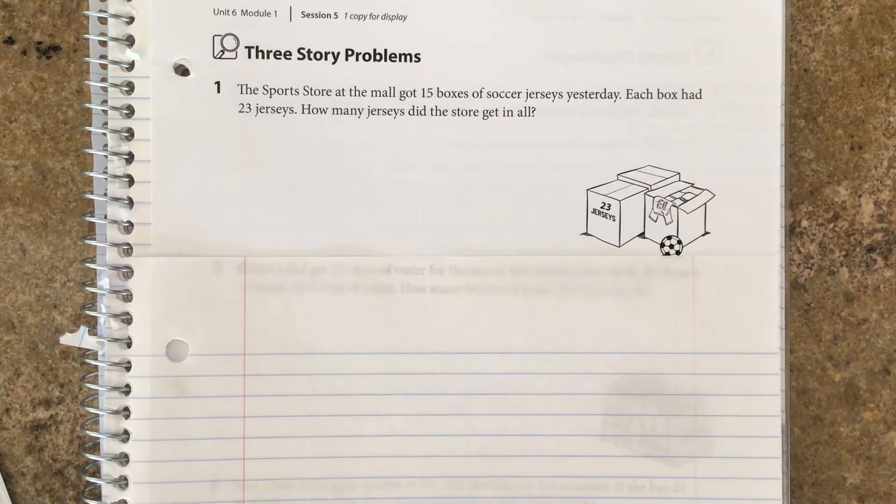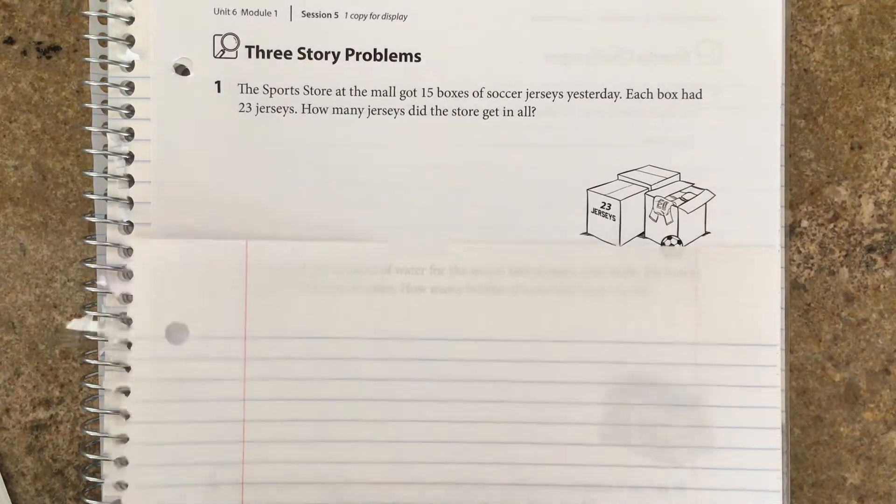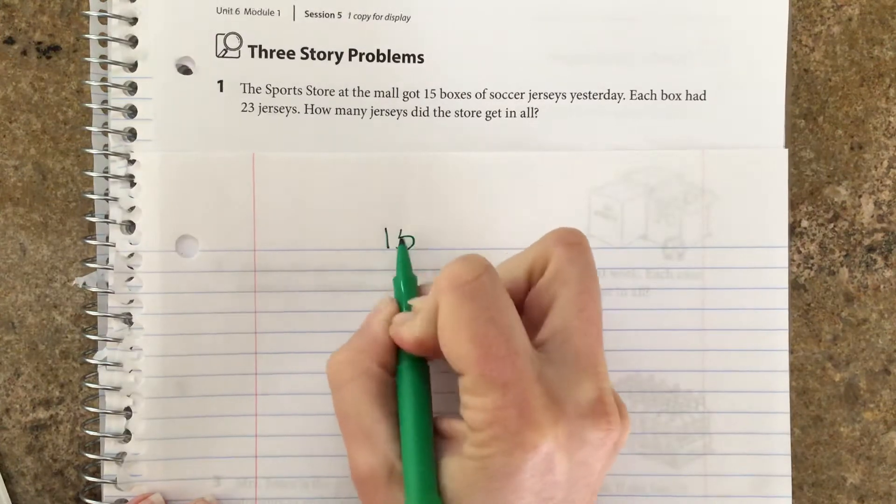Today we are going to look at three word problems and figure out how we could best solve them. The first one says the sports store at the mall got 15 boxes of soccer jerseys yesterday. Each box had 23 jerseys. How many jerseys did the store get in all? So the first thing we want to do is think about what this question is asking us. What's an equation you could write to represent this problem? Each box had 23 jerseys and there were 15 of them.